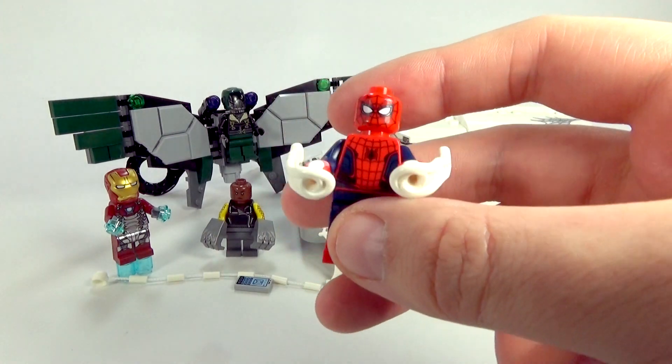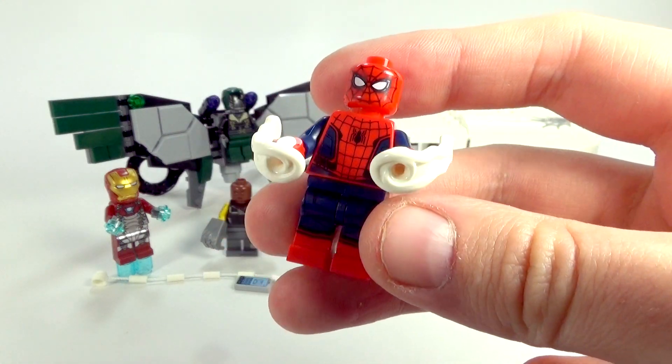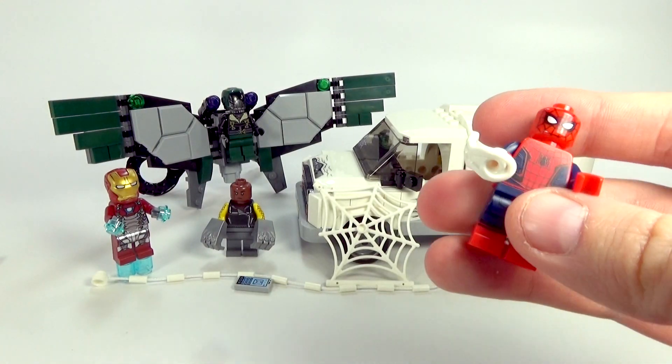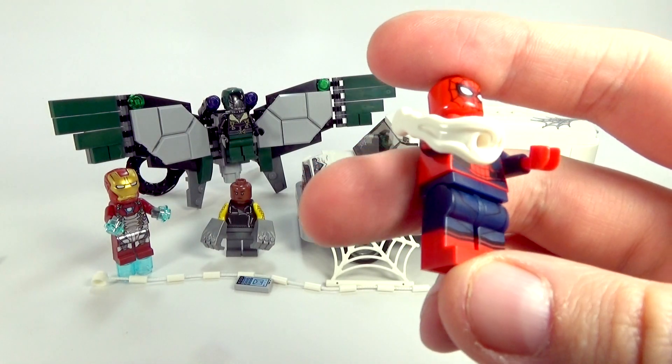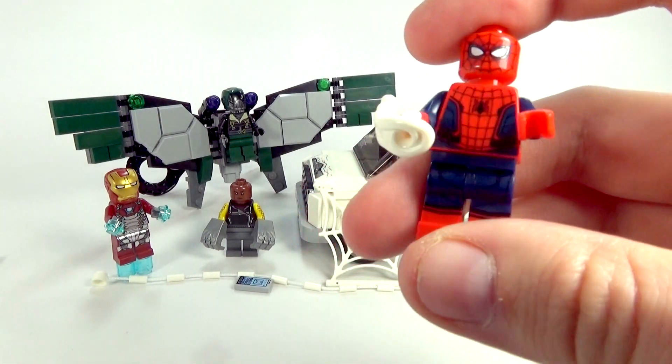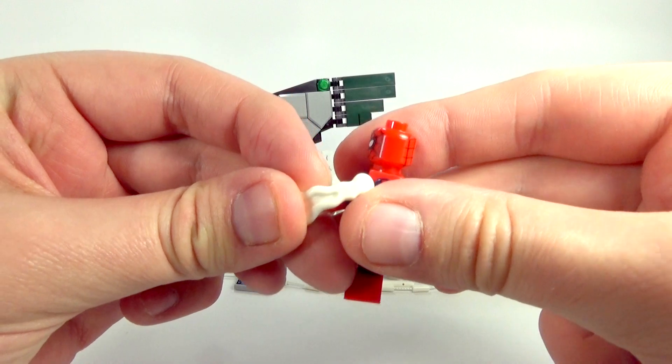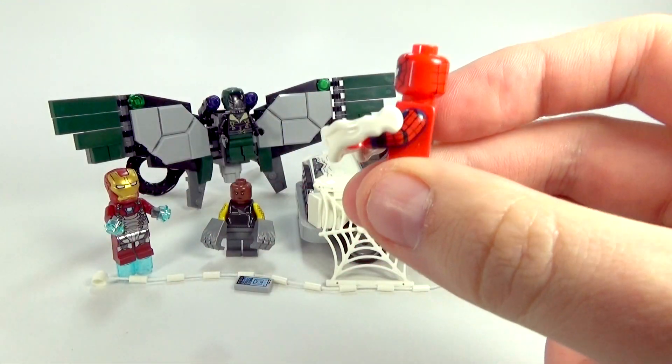First of all, we have the new Spider-Man here in the new movie. And as you'll see right off the bat, he has those new hand flick fire missile things, which look like web blasters, which is pretty cool. They just snap in there real simple. We've got them before in other superhero sets, so that's pretty cool.